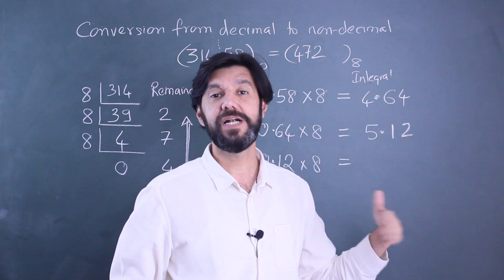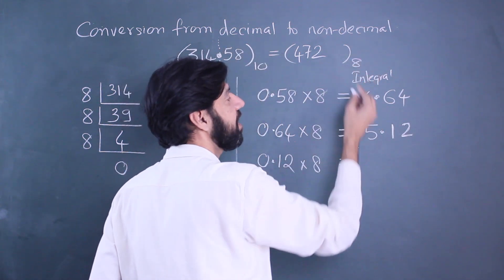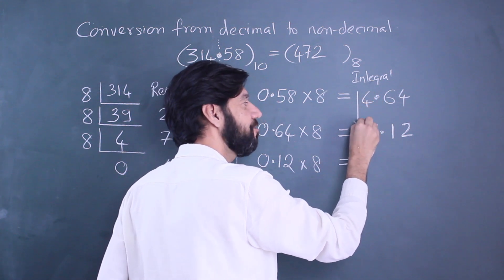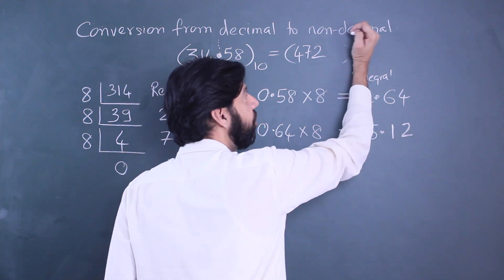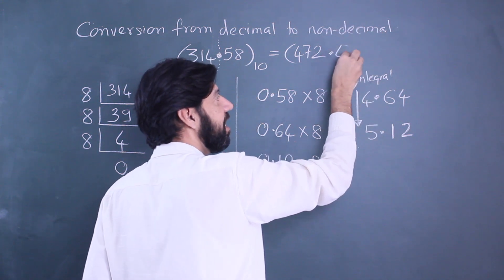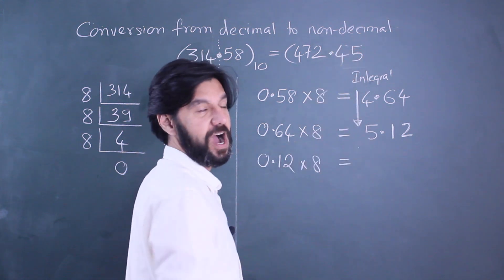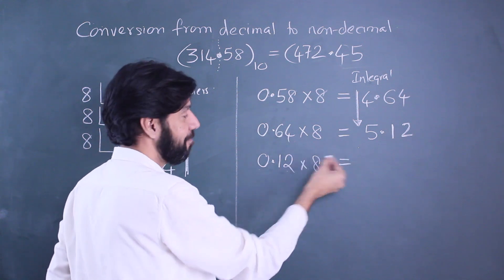Chuck the integral part, take the decimal part and multiply it again. This process can continue indefinitely. You need to decide how many decimal digits you want. The decimal part is going to be the integral values in the correct order, that is from the first one. So the decimal part will read as 0.45.